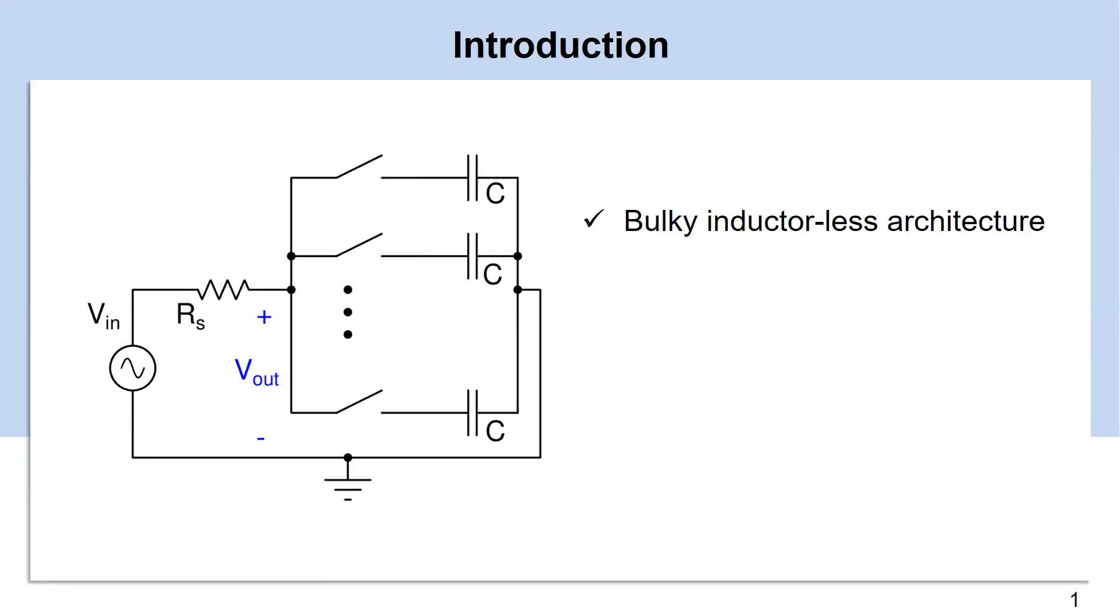N-path filters are best suited for channel selection at RF frequencies because they are on-chip inductor-less filters. It provides high Q, which effectively means that it gives very sharp filtering along with wide tunability and higher linearity.